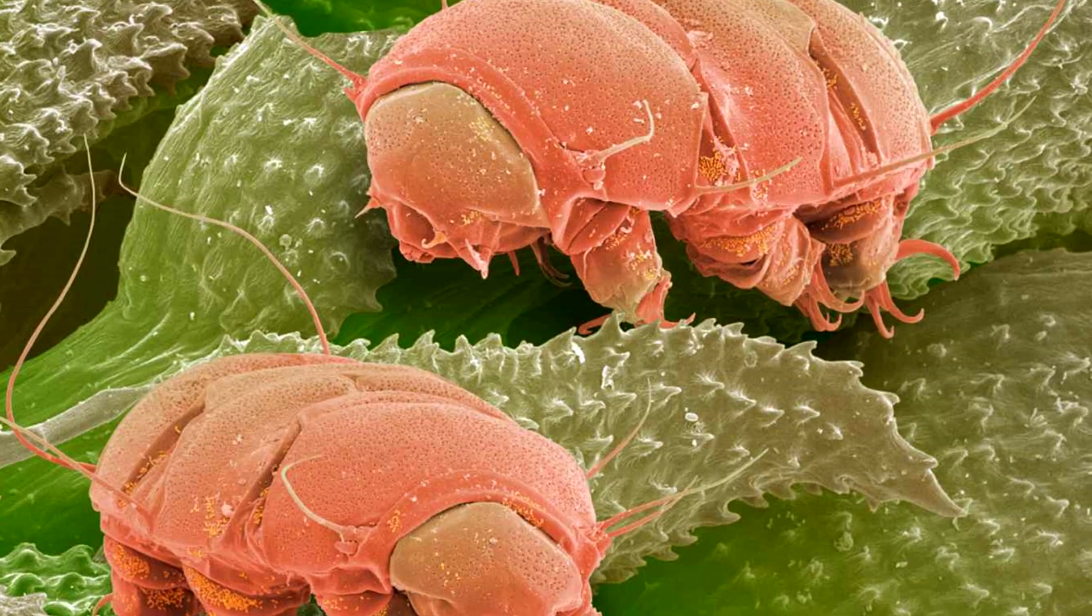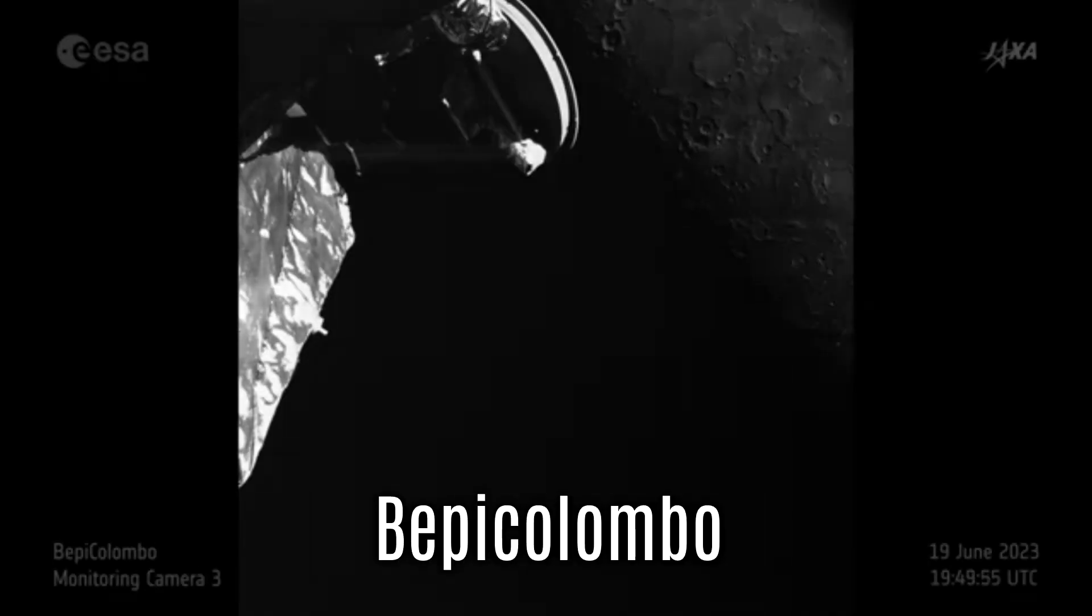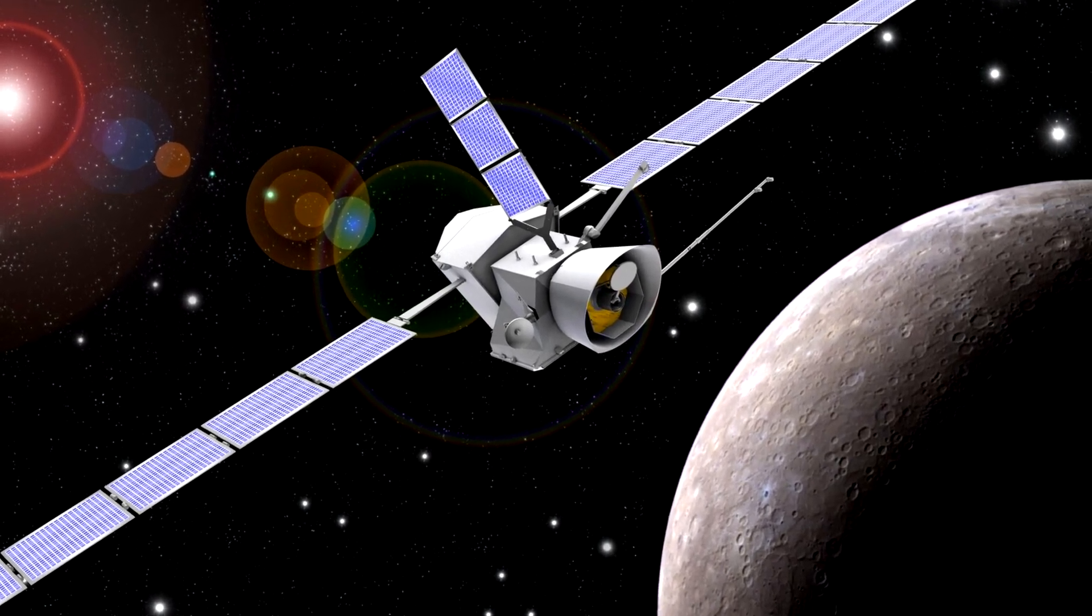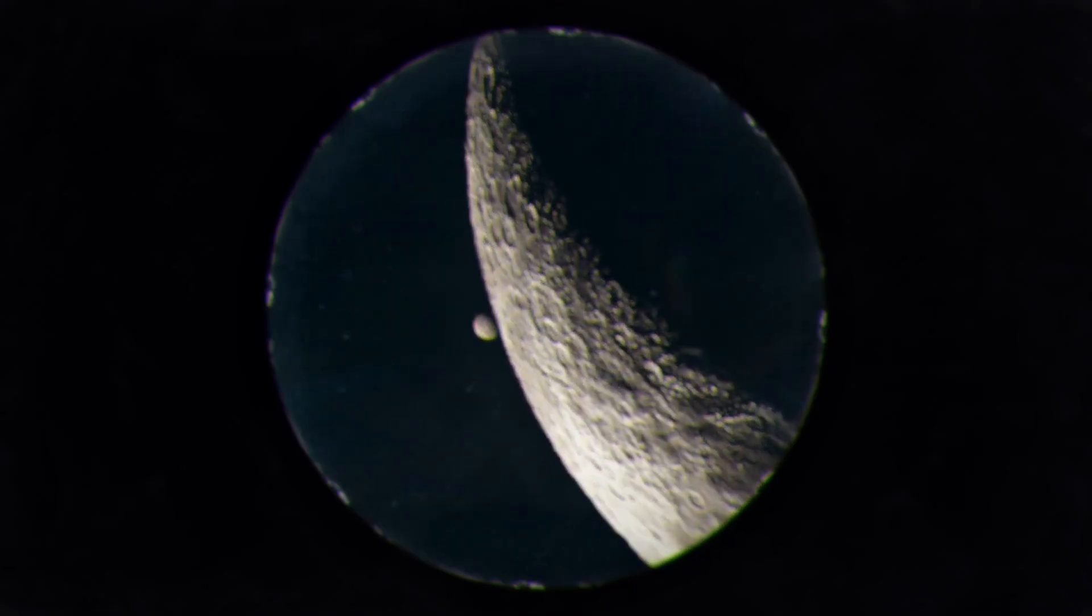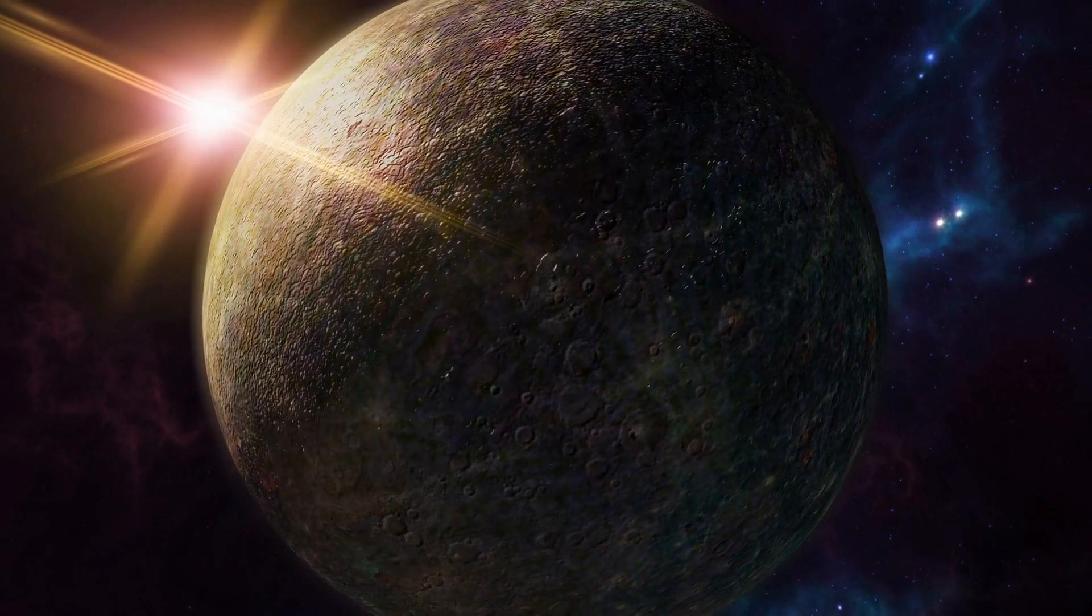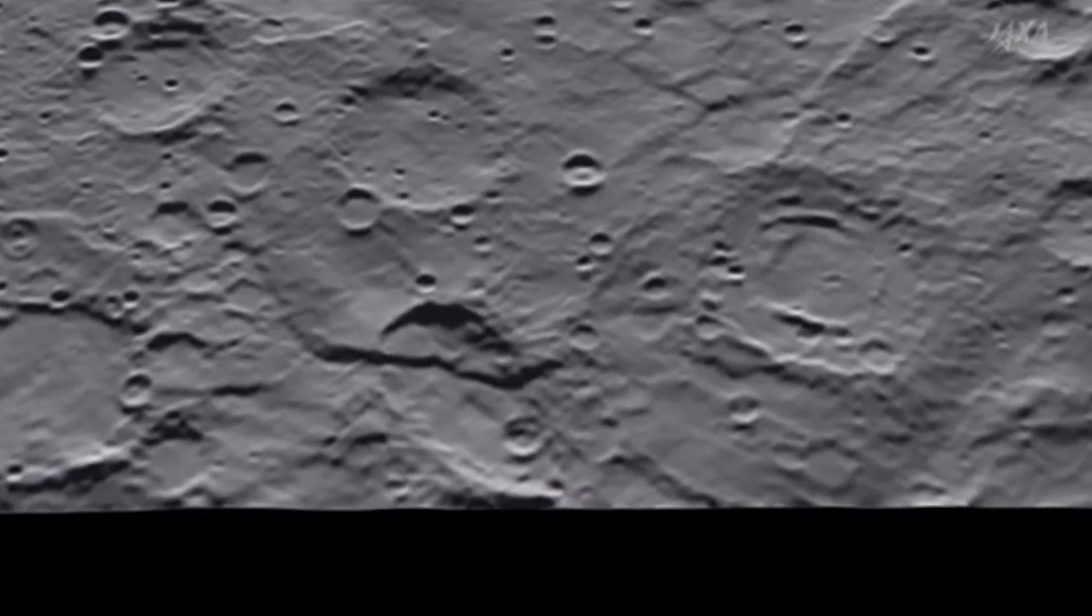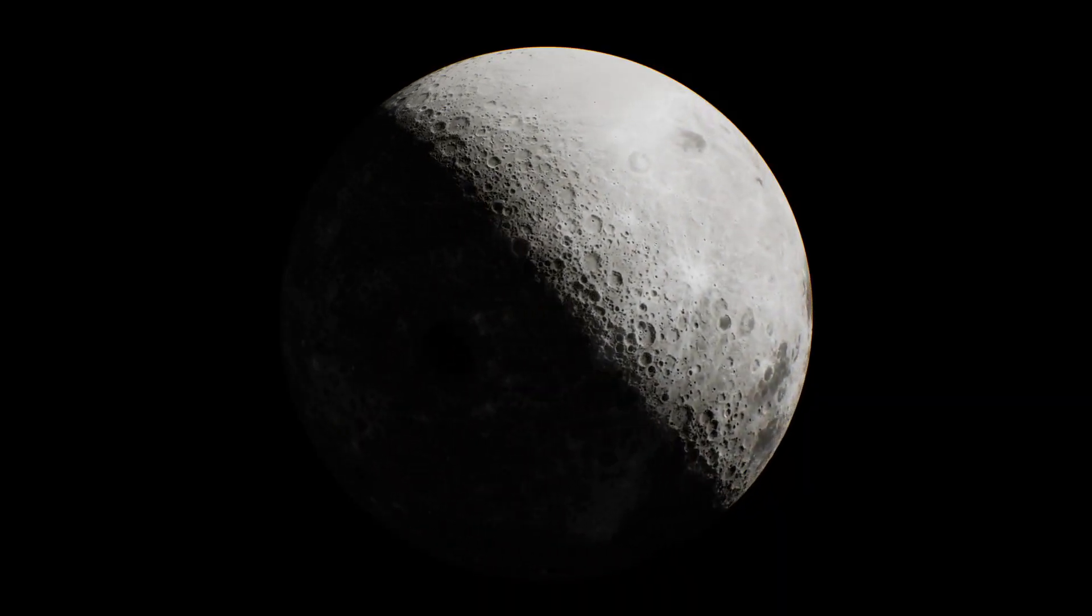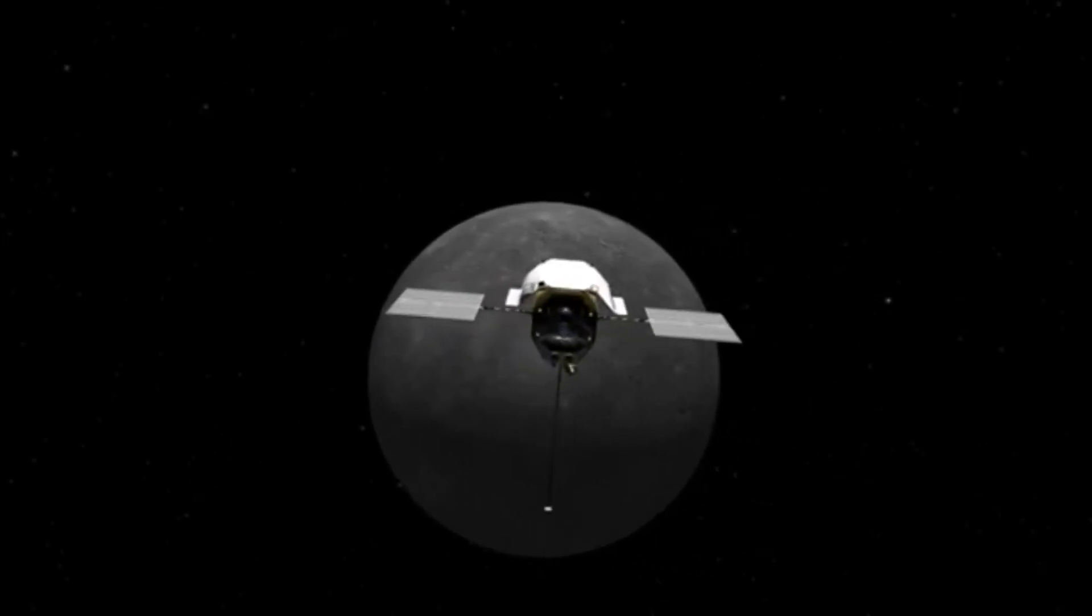The latest mission to Mercury, BepiColombo, was launched in 2018 by the European Space Agency and the Japan Aerospace Exploration Agency, and is expected to reach the planet in 2025. This mission aims to provide even more detailed insights into Mercury's surface, including its chemical composition and geological history. Mercury continues to surprise us.